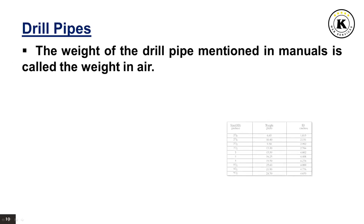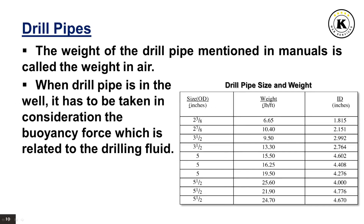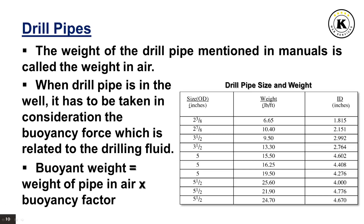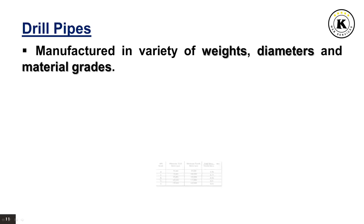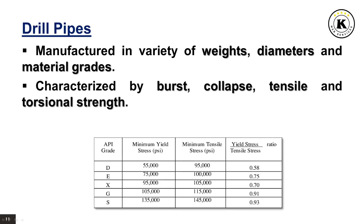The weight of the drill pipe mentioned in manuals is called weight in air. When the drill pipe is in the well, the buoyancy force — which is related to the density of the drilling fluid — must be taken into consideration. The buoyant weight equals the weight of pipe in air times the buoyancy factor. The drill pipe is manufactured in a variety of weights, diameters, and material grades, and is characterized by burst, collapse, tensile, and torsional strength.